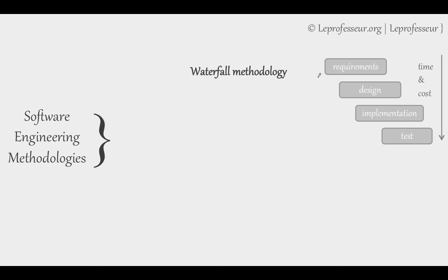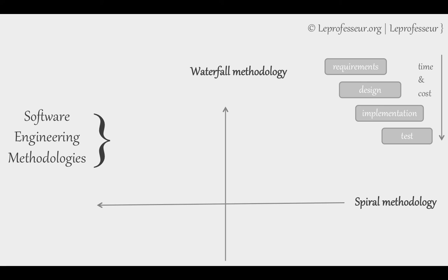People then came up with another model widely known as the spiral methodology or spiral model. In the spiral methodology, the whole software development process is divided into four quadrants. Initially, as in every methodology, we determine the objectives — what our software is going to do. Second, we identify and resolve risks. What are different kinds of risks? For example, a key employee or key staff engineer may leave. Or how many engineers do we have? Or has control of the whole project been given to one person?